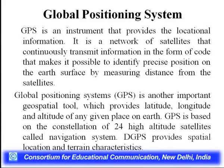GPS is an important geospatial tool providing latitude, longitude, and altitude. It is very useful for landslide study and snow avalanche research in high mountain regions where it is difficult for surveyors and researchers to reach. Glacier study and snow avalanche monitoring benefit greatly because we can get accurate location data. GPS is based on a constellation of 24 high-altitude satellites called a navigational system. Differential GPS (DGPS) provides spatial location and more precise terrain characteristics.